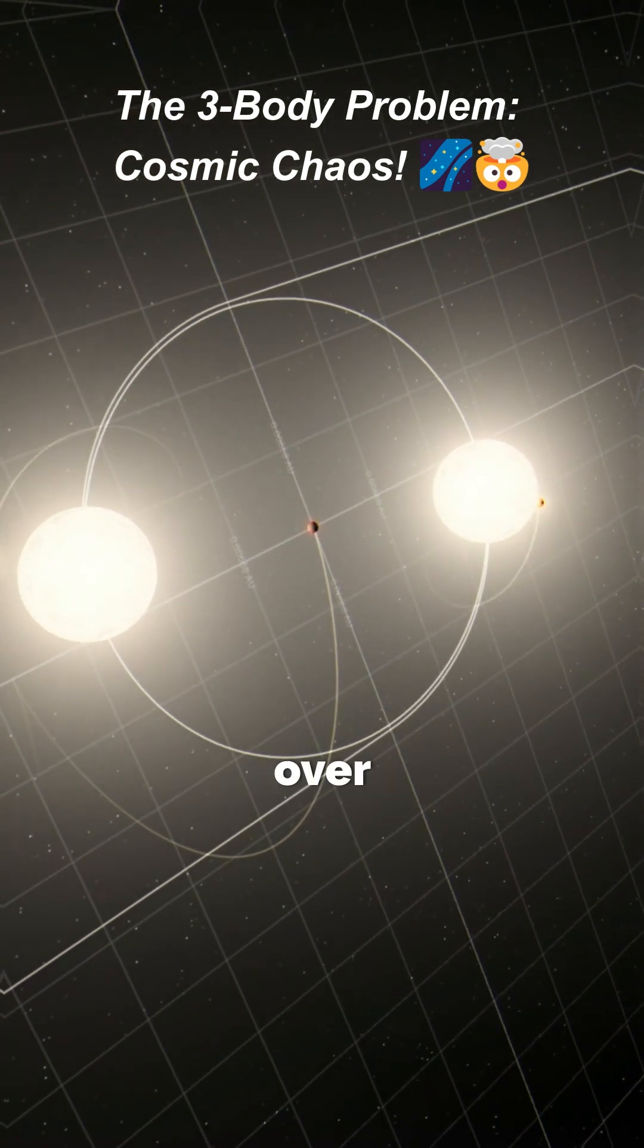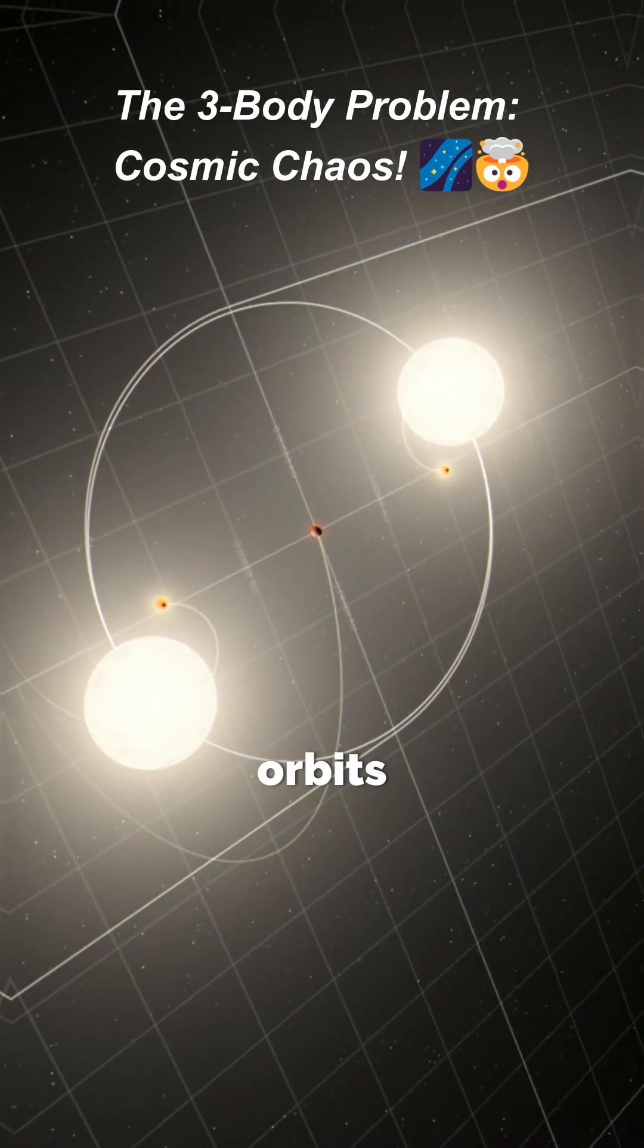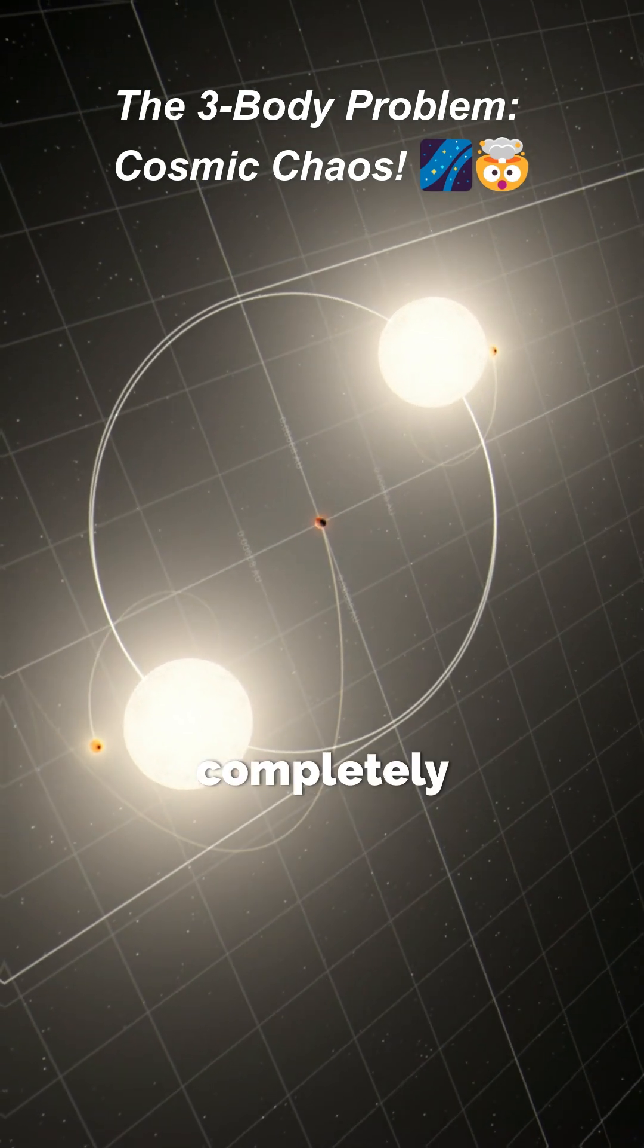Scientists have been scratching their heads over this since Isaac Newton's time. Even with supercomputers, we can only predict these orbits for so long before things go completely bananas.